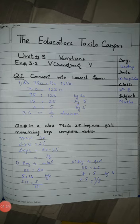Boys = 60 minus 25 = 35. Part one: boys to total — boys are 35 and total are 60. Part two: boy to girl — boys are 35 and girls are 25. Find the ratio from 35 to 25, which gives 7:5.